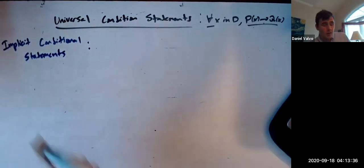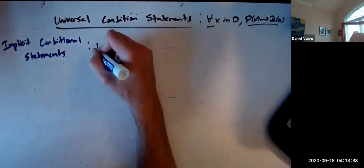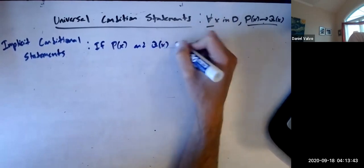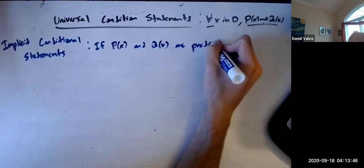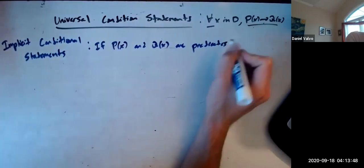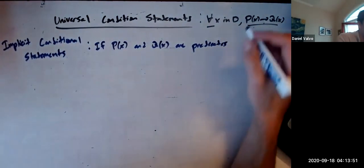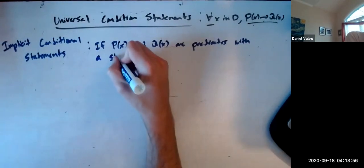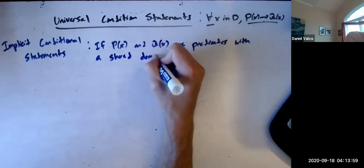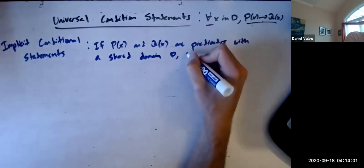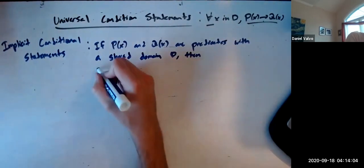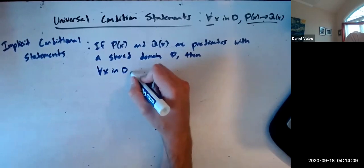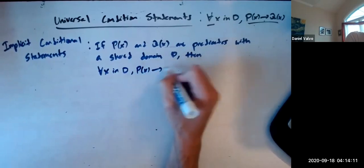What these guys are is, if P of X and Q of X are predicates with a shared domain D, then for all X in D, P of X implies Q of X. This is your original statement.